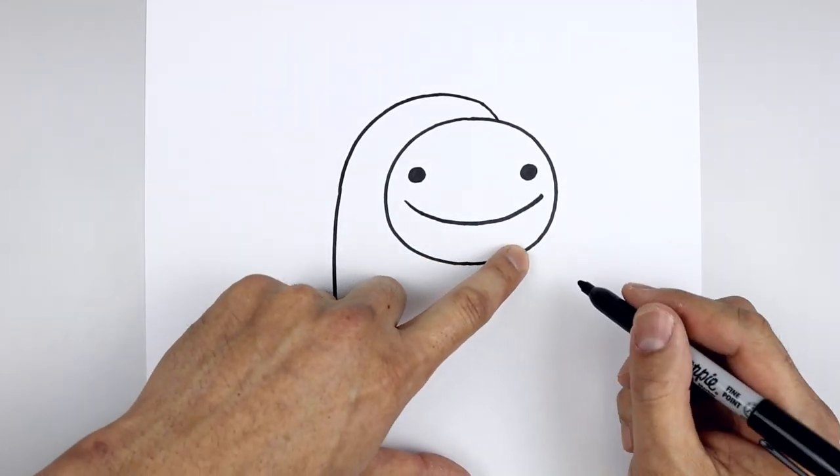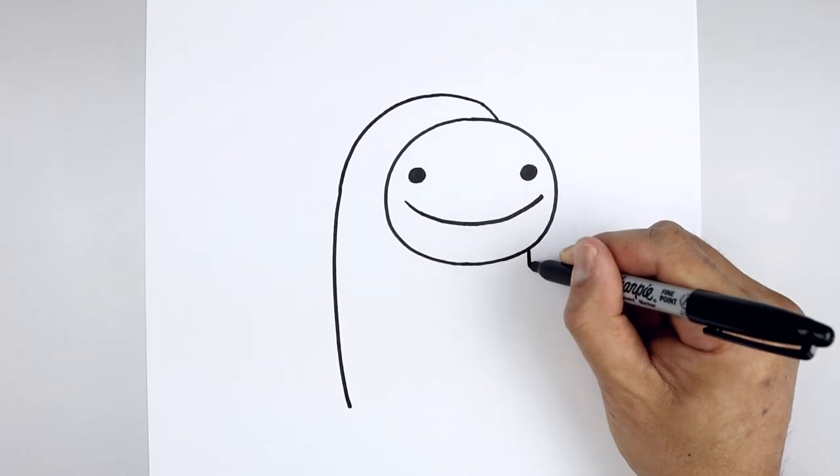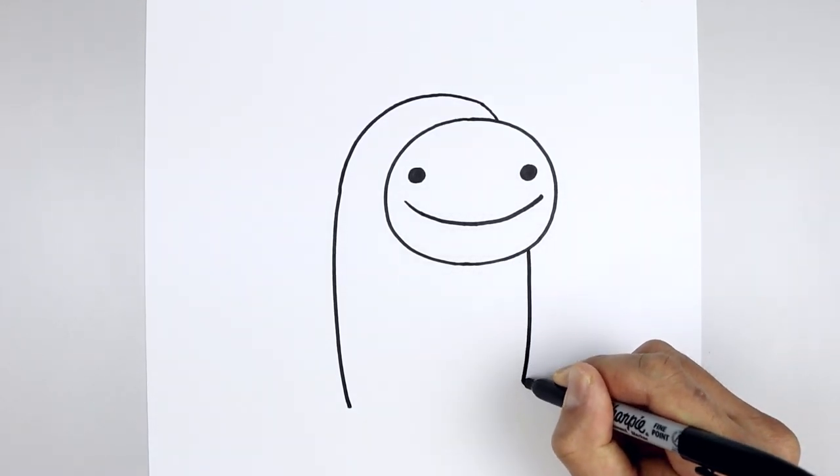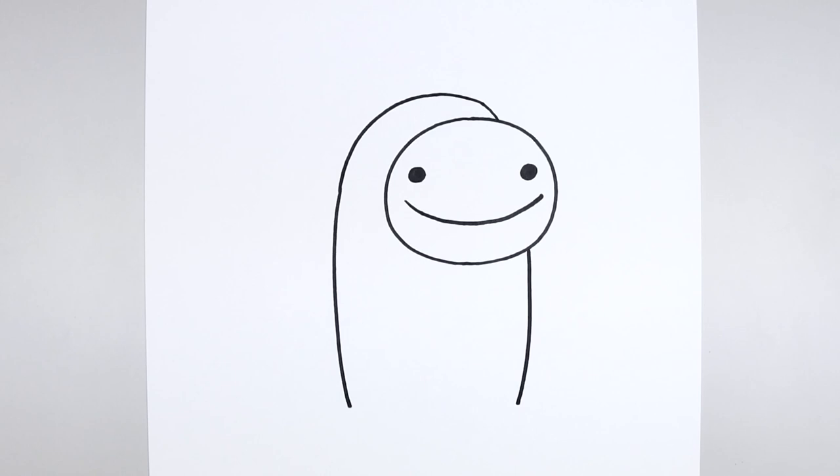Let's go underneath the face on the right side, curve the body coming down and then just bend that in towards the same height. Then we'll round out the bottom of the feet. Starting on the left, come down and then up. Go over towards the right, just leaving a gap in between the feet.